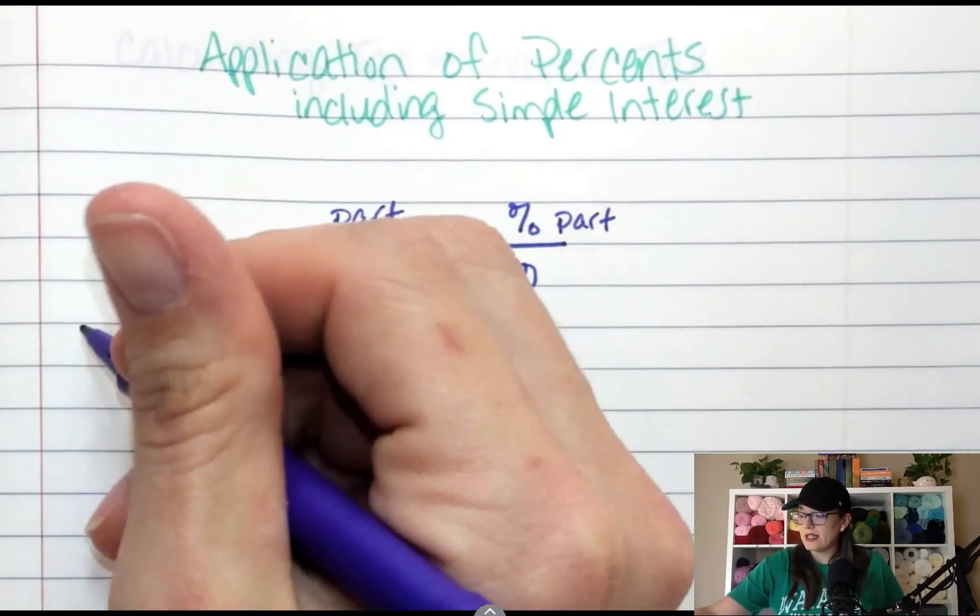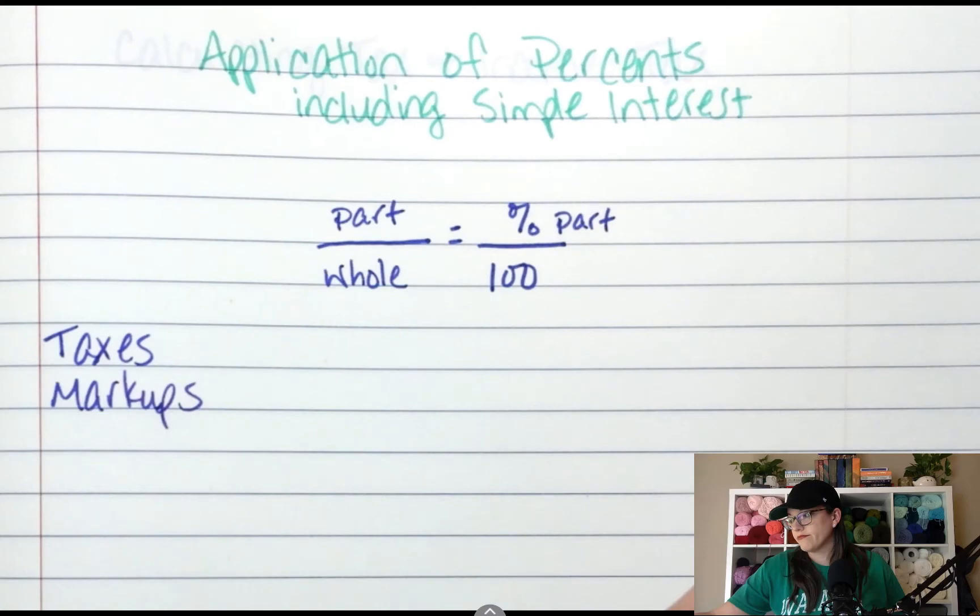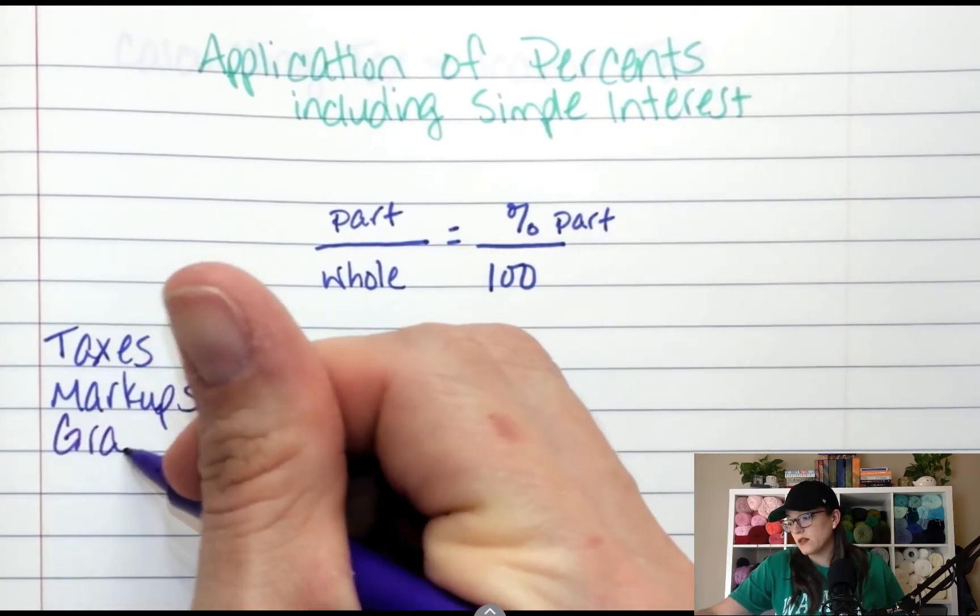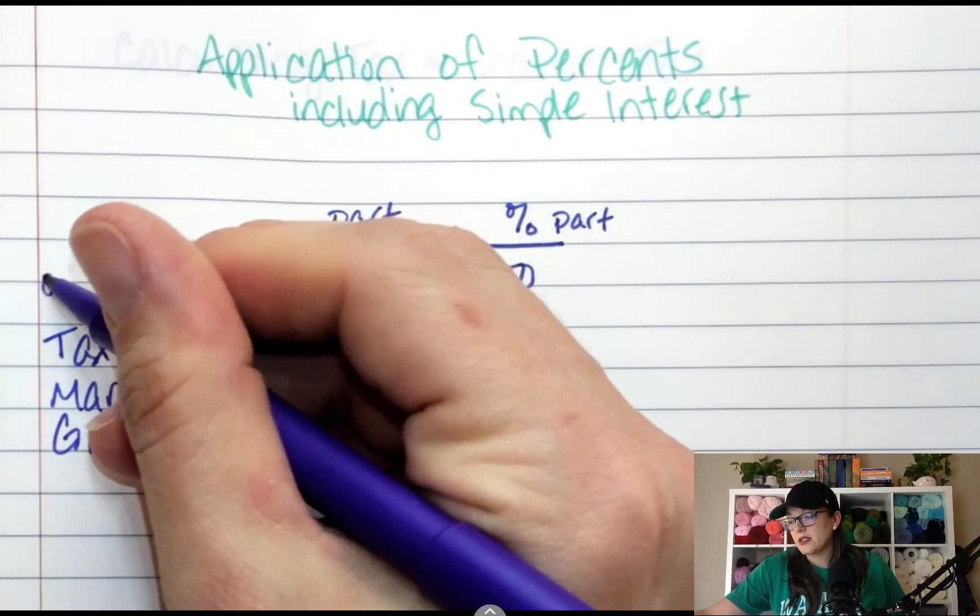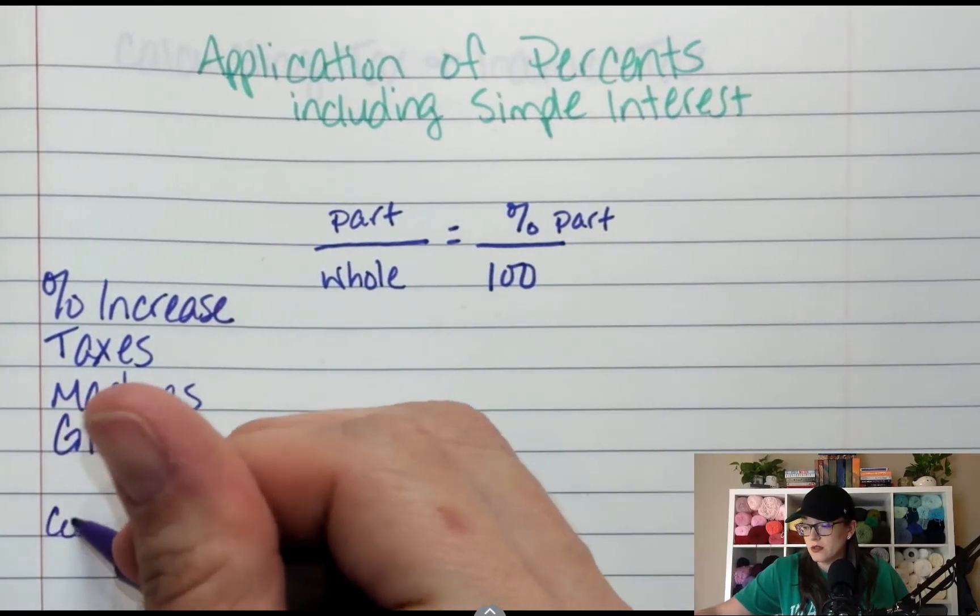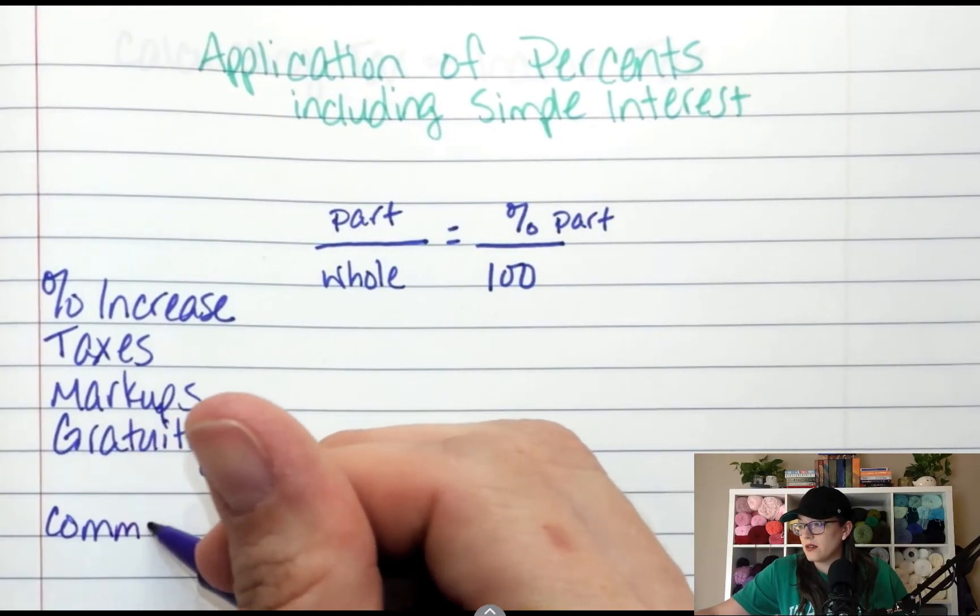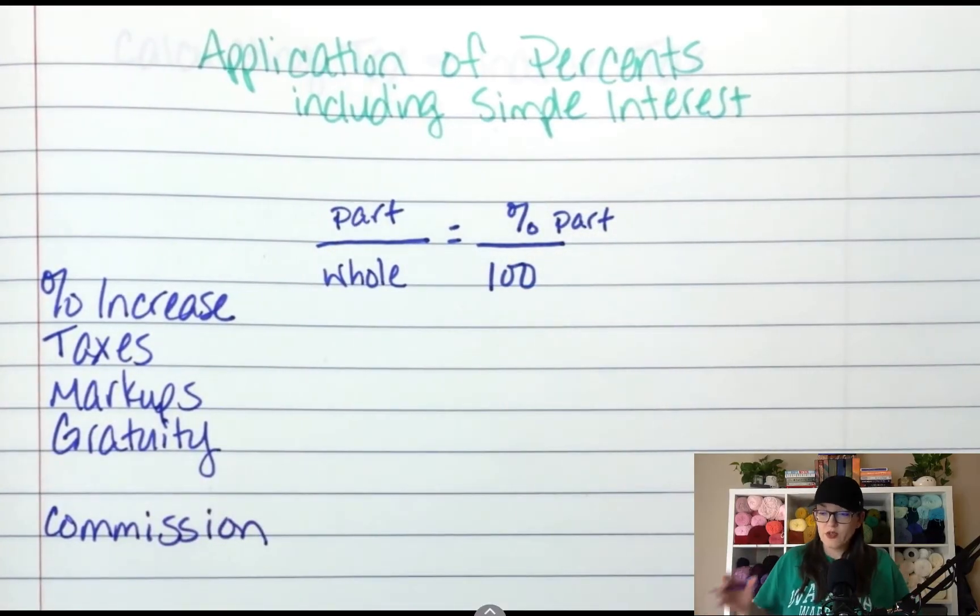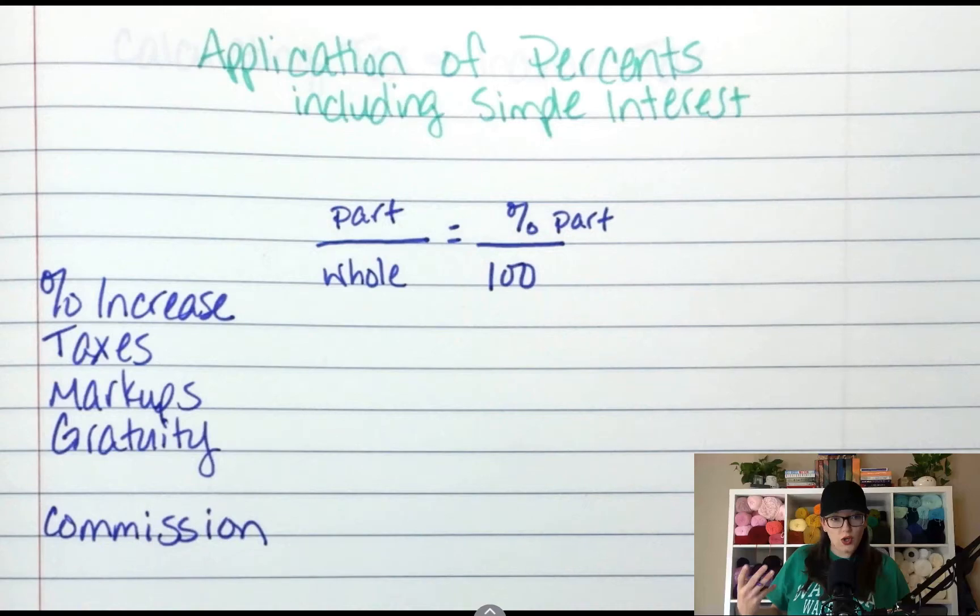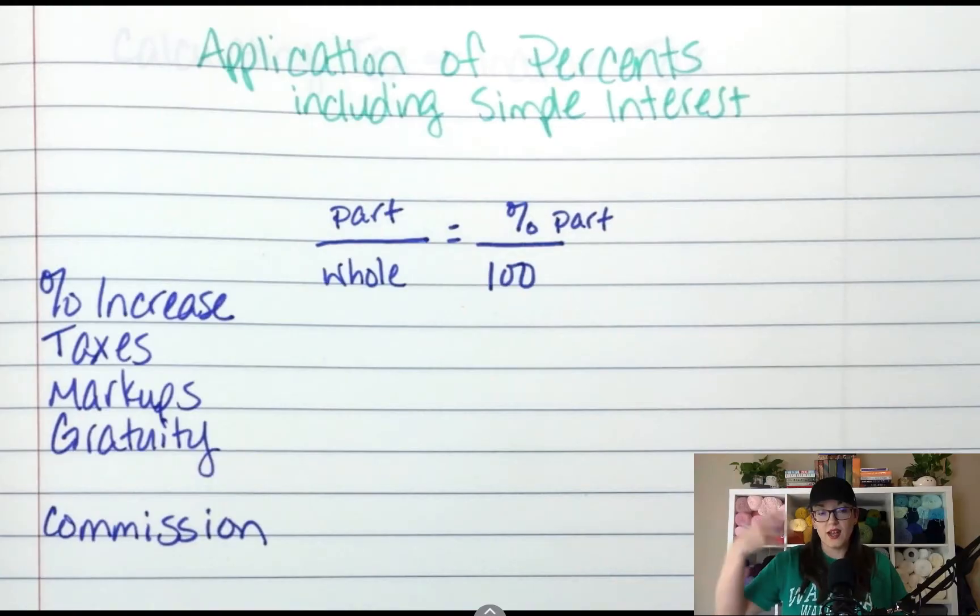If you have taxes, markups, gratuity, those are all percent increases. Another one that you might hear is called commission. So a commission is when you earn a percent on your sales. So if I sell cars, I might make a small salary, but then I get a percent for every car I sell. And that's called commission. So you would take the salary, find the percent of sales, and then add it.